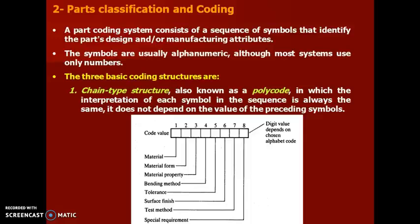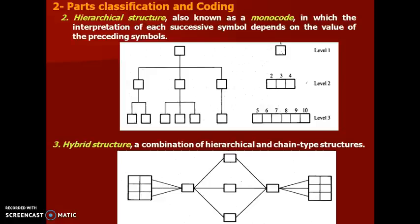For example, code digit 1 will always refer to the material. Similarly, code digit 7 will indicate the test method used, irrespective of the value of digit 6. The second structure is the hierarchical structure, also known as monocode, in which the interpretation of each successive symbol depends on the value of the preceding symbols. The third is the hybrid structure, which is a combination of the hierarchical and chain type structures.